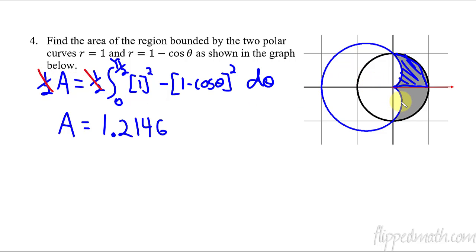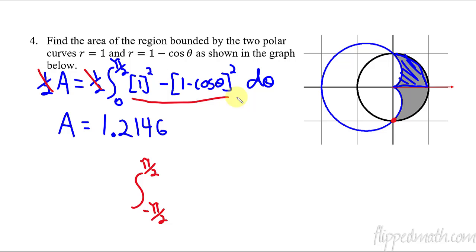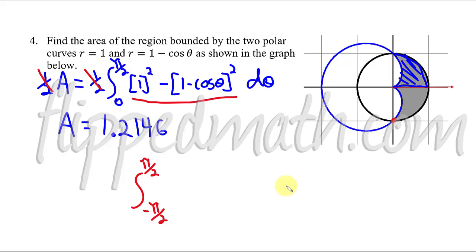Alternatively, instead of using symmetry, you could start the lower limit at negative pi/2 and go up to pi/2 to capture the full gray region directly. On multiple choice, they'll be tricky — you might have the integrand correct but get the upper and lower limits wrong for the shaded region. That's it — we've finished unit 9! This is Mr. Bean signing off; I'll see you in unit 10. Rock that master check!